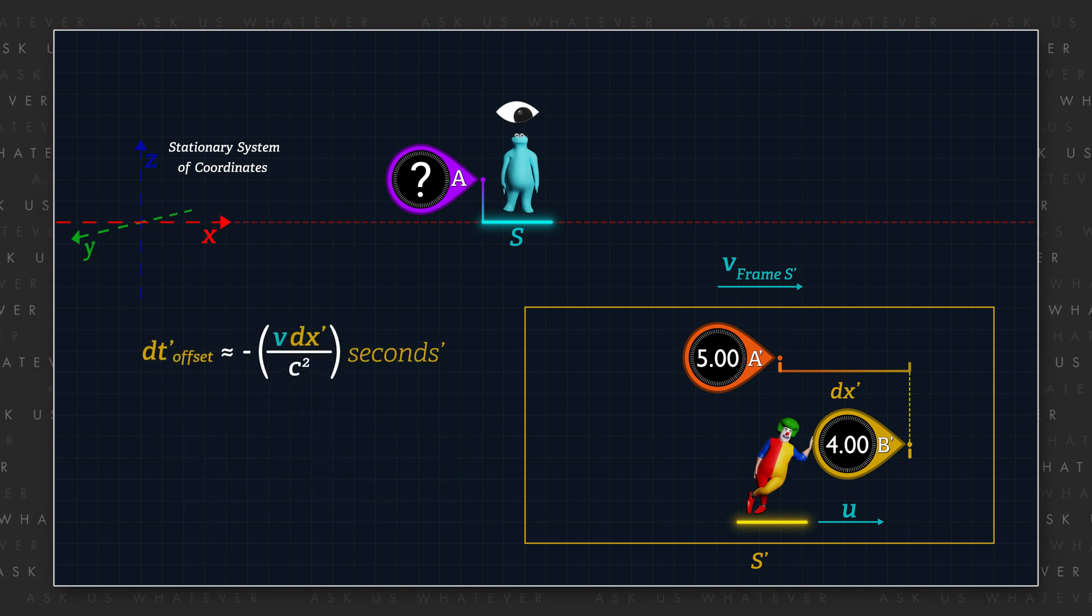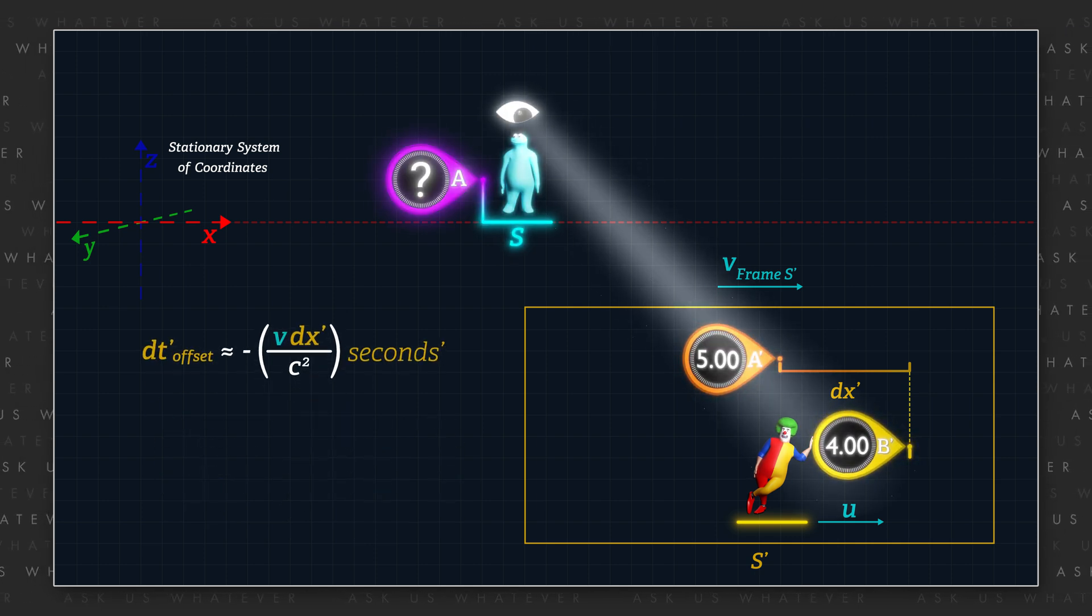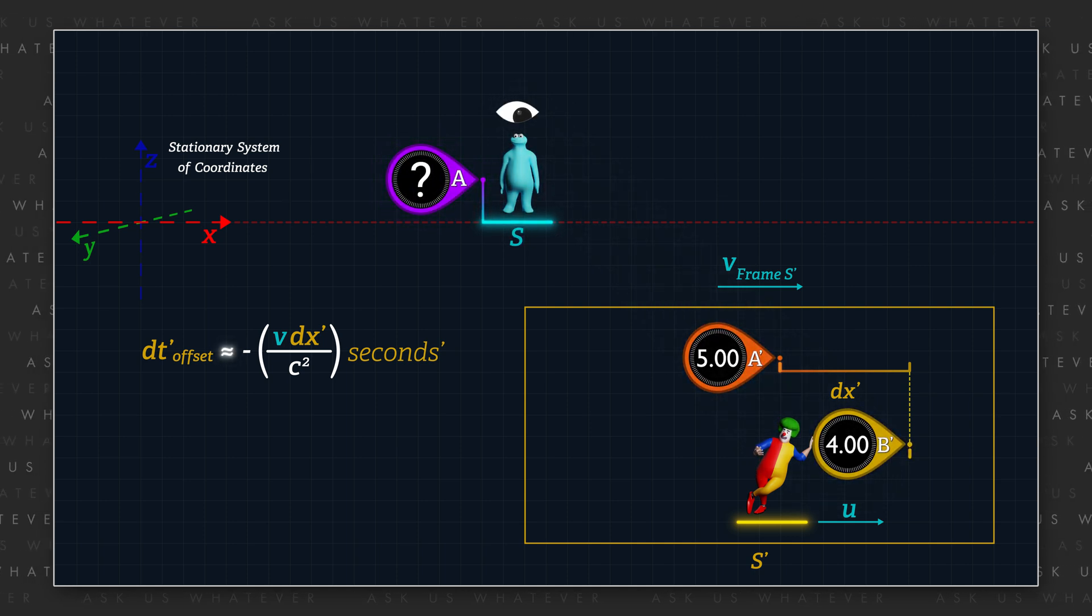And so, the difference in readings between clocks A' and B' as observed from frame S will be approximately V times DX prime divided by C squared.